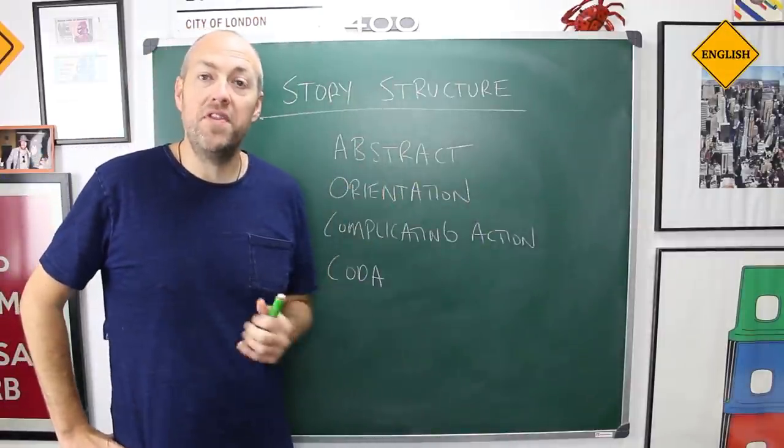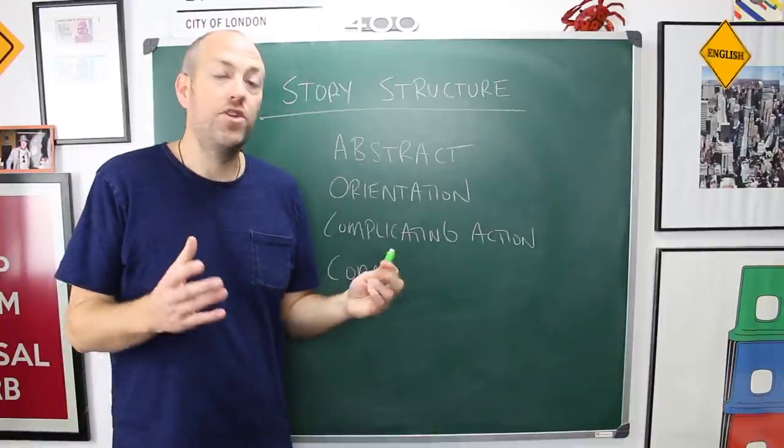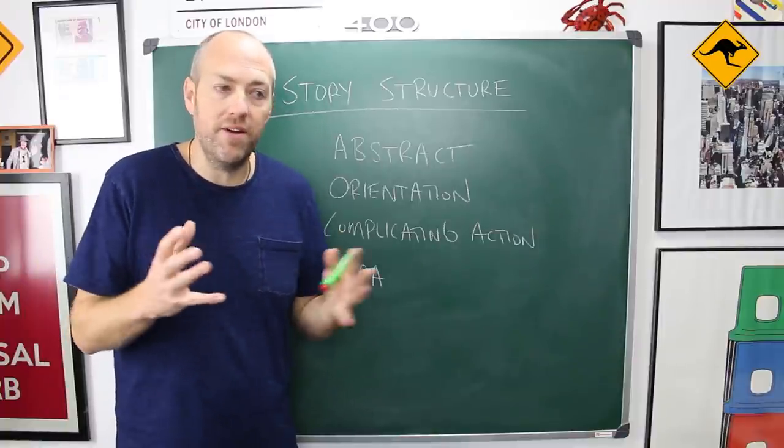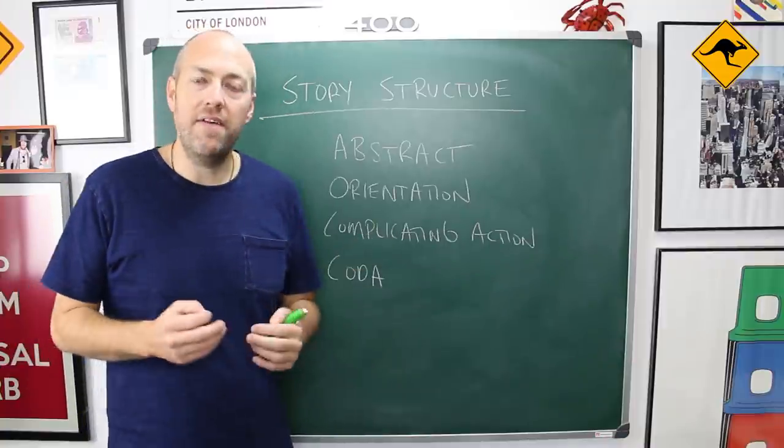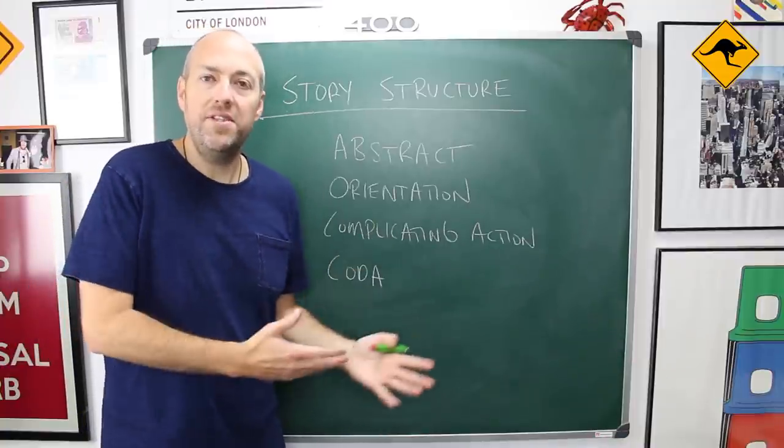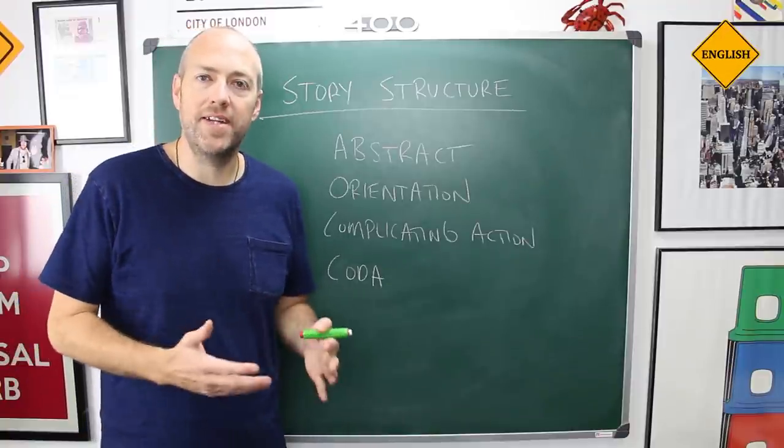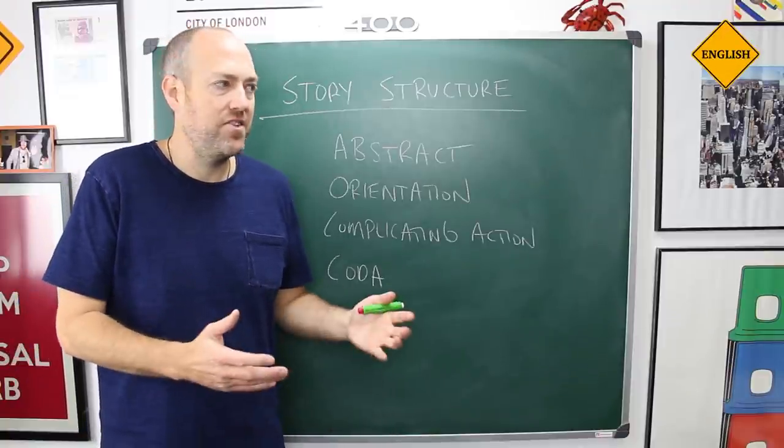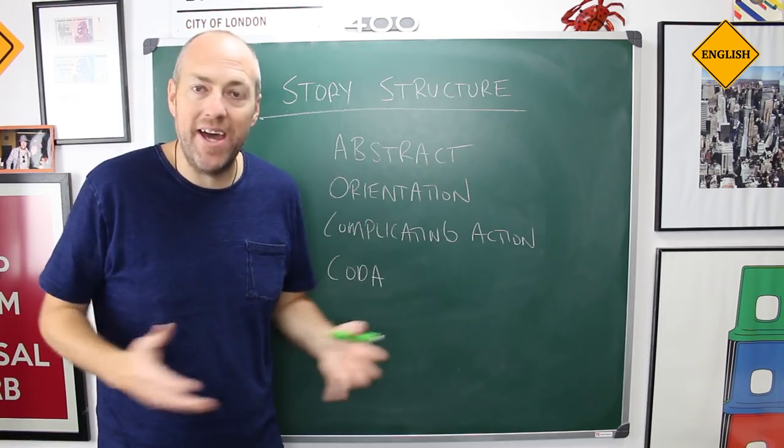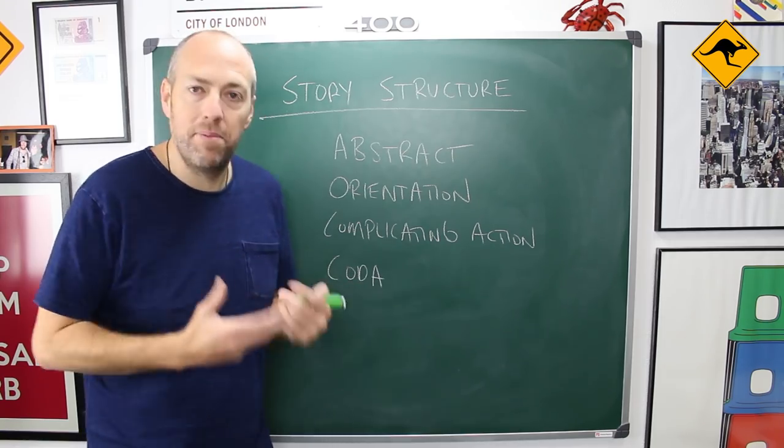So we begin with the abstract, which is a short summary of what happened. Then we have the orientation. When did it happen? Where did it happen? Then we have a complicating action. Something which is bad or good, which happens to complicate the story.